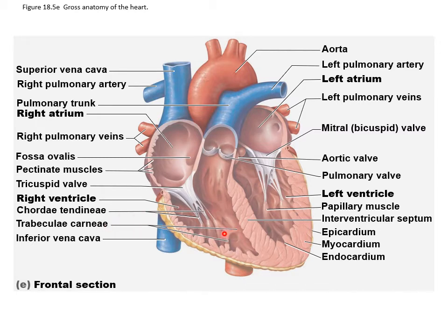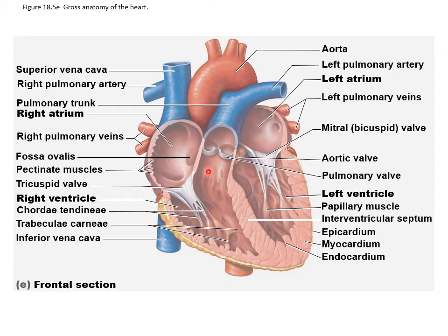The cordae tendineae are the tendinous cords that anchor the valve flaps to elevations of muscle in the ventricular wall called papillary muscles — you have papillary muscles in both the left and right ventricle. Trabeculae carniae is the name given to the appearance of the muscle in the inner wall of the ventricles — it looks like a honeycomb, those little beams similar to what we saw in spongy bone.